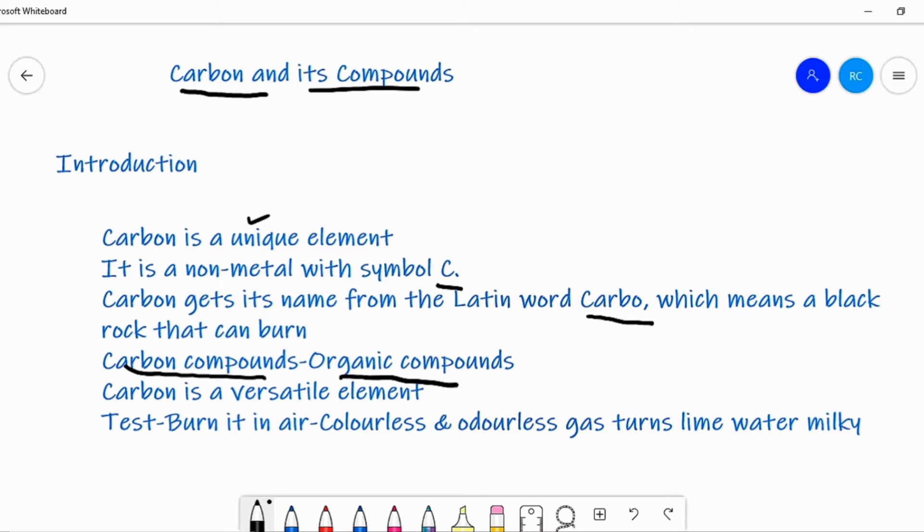For example, our food materials like grain, pulses, fats, sugar, tea, coffee, fruits, vegetables, etc. are made up of carbon compounds.